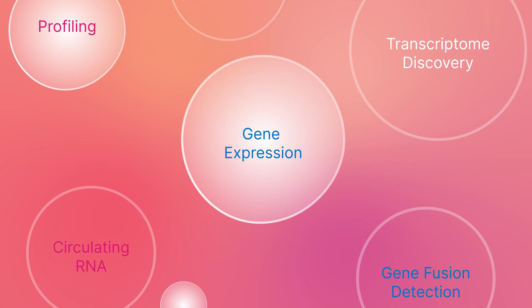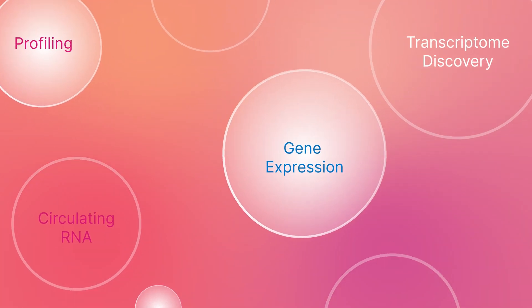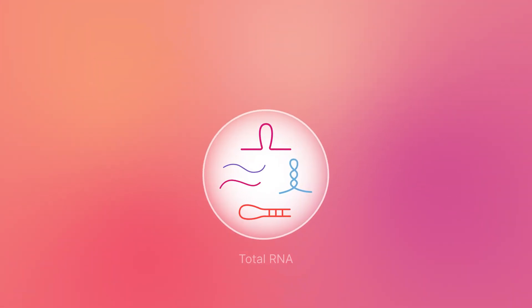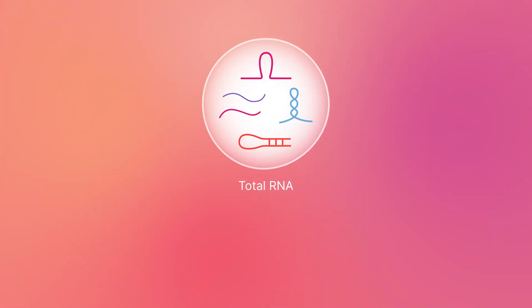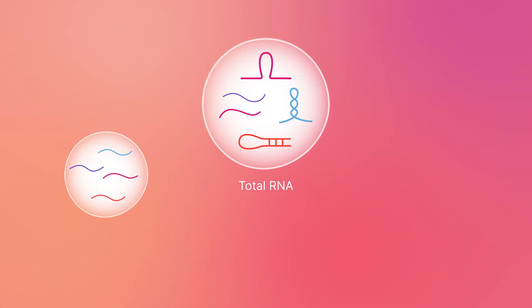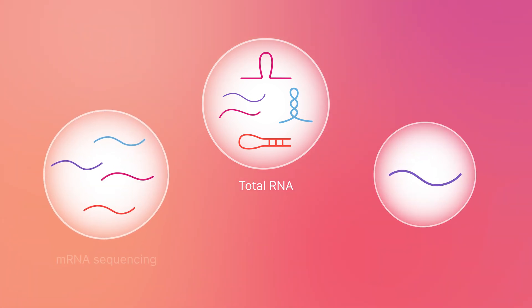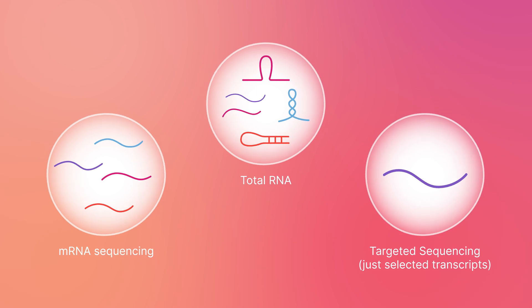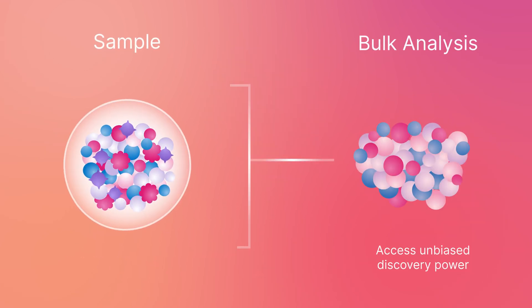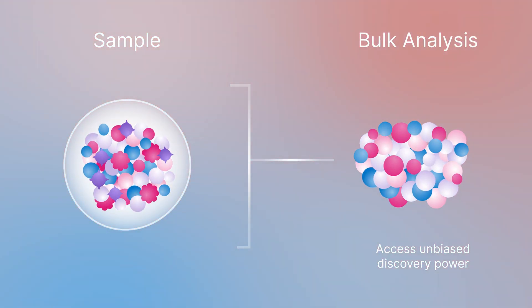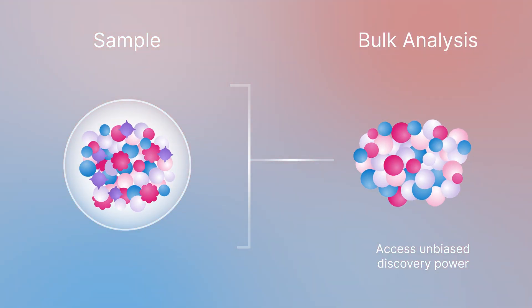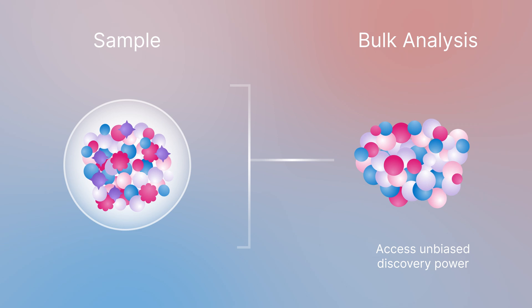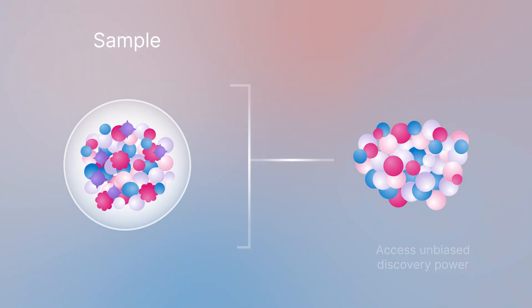The choice of the library prep will be determined by the research goal. A scientist may choose to sequence either total RNA, focus on mRNA only, or sequence just a few chosen targets. The most common approach is to measure average expression of RNA across an entire sample — bulk analysis.